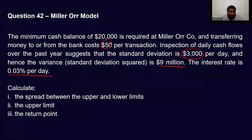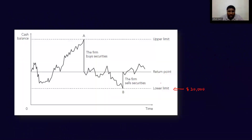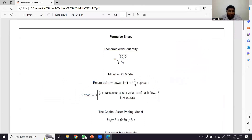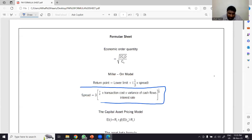What is the spread between the upper and the lower limit? The difference between the upper limit and the lower limit is called the spread. There is a formula to calculate the spread — it's in the formula sheet. This is the formula you have to use to calculate the spread.